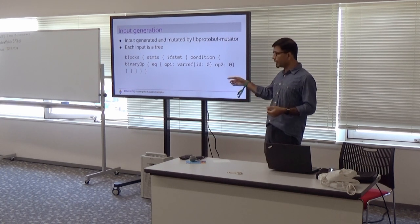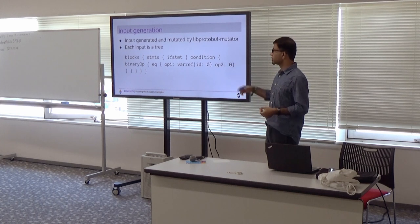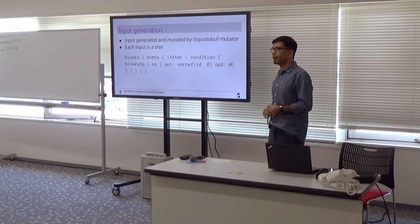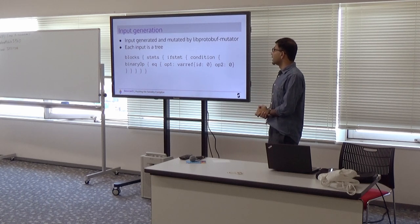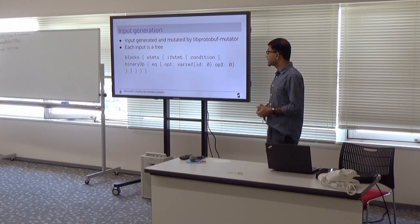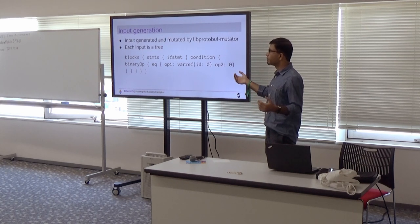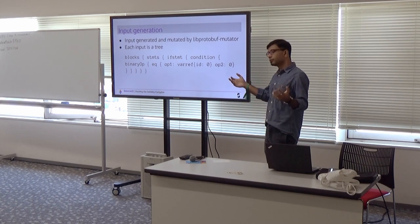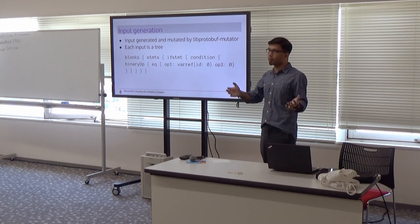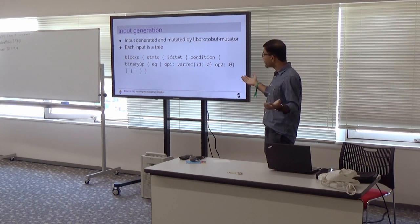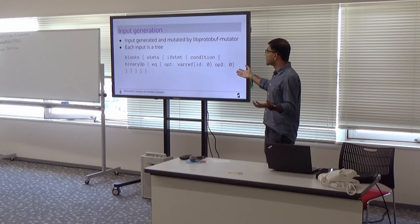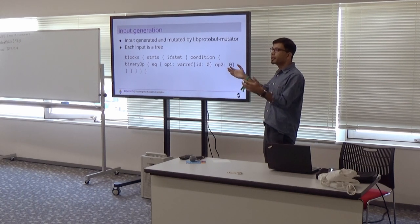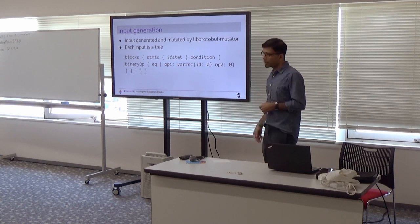Which is an instantiation of the spec. So each input is essentially a tree. For example, it can look like what is shown below here. You have it defines blocks, and blocks contains a statement, which is an if statement in this case, and the if statement has a condition which contains a binary operation, which is an equality, and the first operand of that equality is a variable reference, the variable's id is zero, and then the constant that it is being compared against is zero.